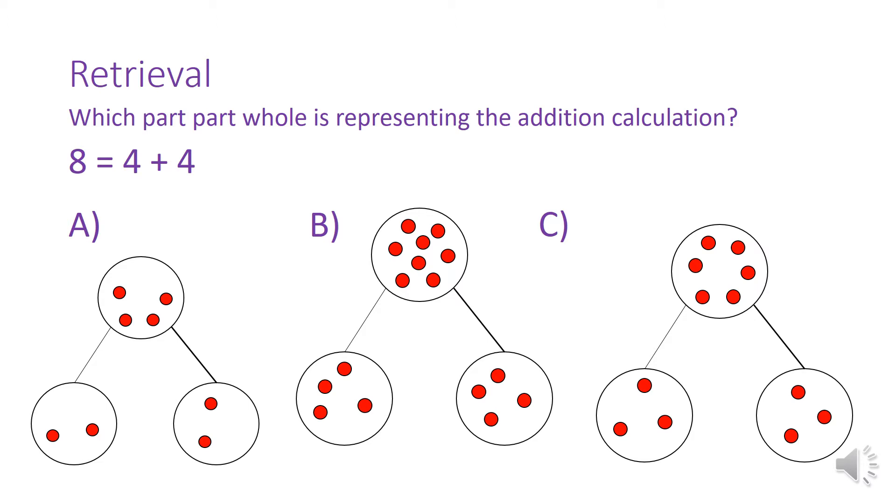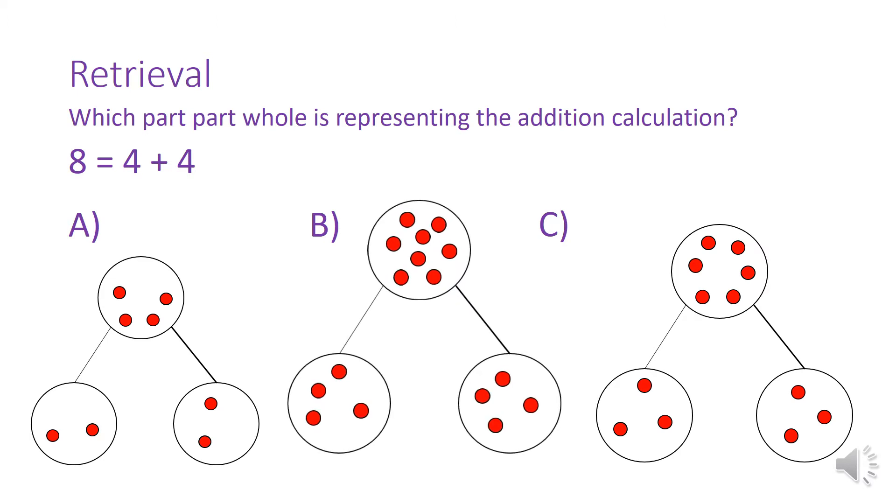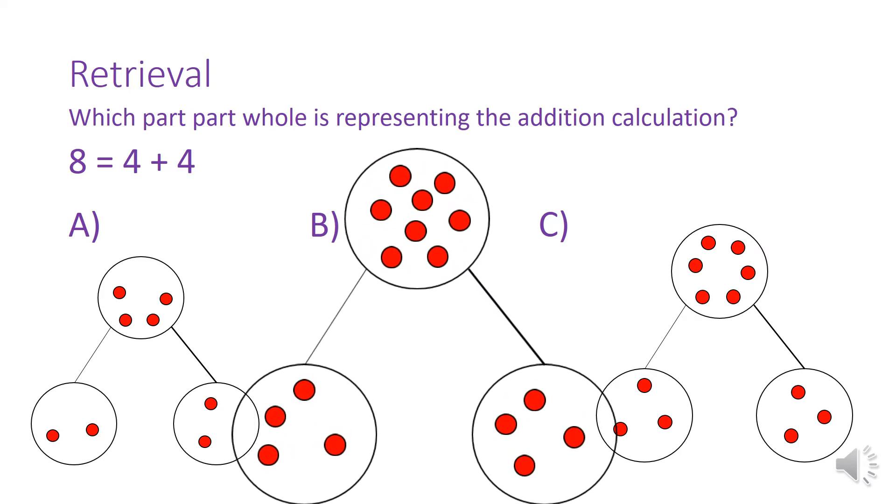Hopefully you've all had a go and worked out which part part whole is representing the addition calculation 8 equals 4 add 4. And it is B because we have 8 spots in the top circle in the whole and it's made up of a 4 and a 4. So we've divided it, we've split it into two equal groups. Well done!